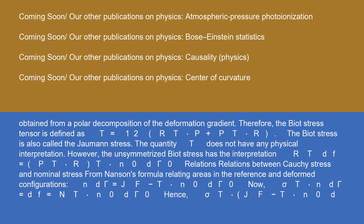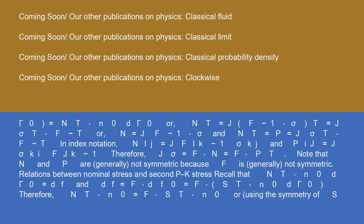The Biot stress is also called the Jaumann stress. The quantity T does not have a direct physical interpretation. However, the unsymmetrized Biot stress has the interpretation R-transpose dF equals P-transpose R times N-zero d-gamma-zero. Relations between Cauchy stress and nominal stress: from Nanson's formula relating areas in the reference and deformed configurations, N d-gamma equals J F-minus-transpose N-zero d-gamma-zero. Therefore, sigma-transpose N d-gamma equals dF equals N-transpose N-zero d-gamma-zero, giving N-transpose equals J F-inverse sigma, or equivalently N equals J sigma-transpose F-minus-transpose, and P equals J sigma F-minus-transpose. In index notation: N-ij equals J F-ik-inverse sigma-kj, and P-ij equals J sigma-ki F-jk-inverse.